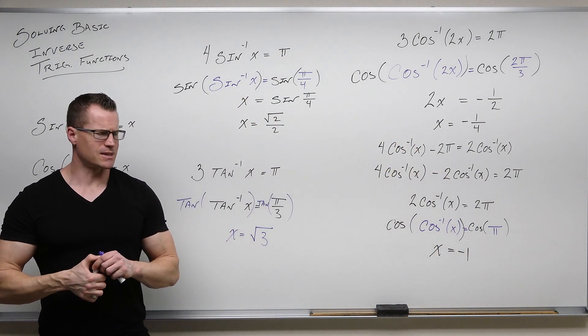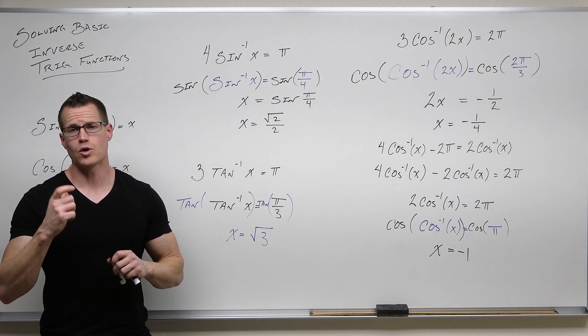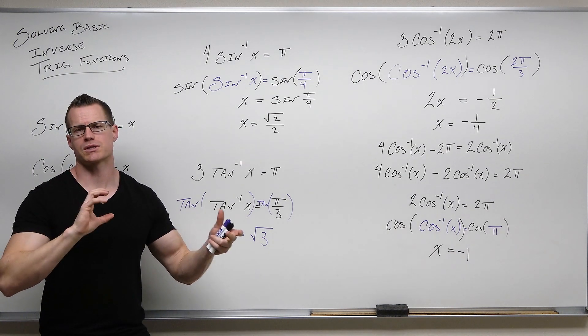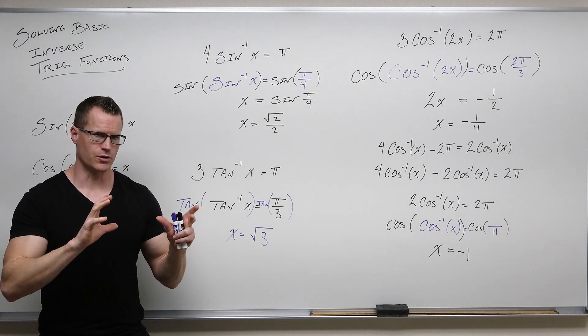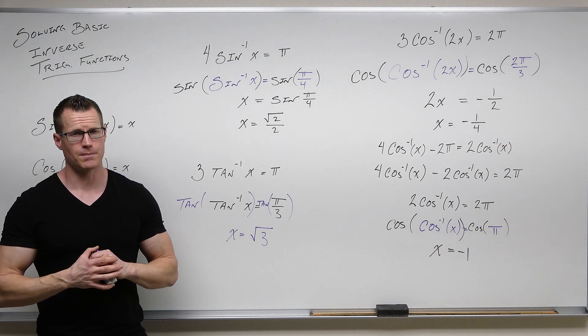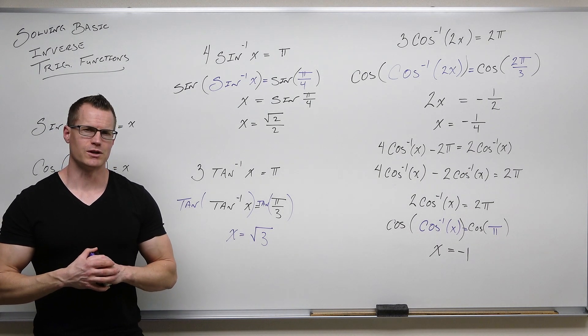And we're done. So I hope that that makes sense. It's honestly really quick. Isolate your inverse function and take the appropriate, honestly, parent function, that root function on both sides. Your functions undo inverses, just like inverses undo functions. Not a whole lot with domain that we have to mess with here, which is very nice. I hope it makes sense. And I'll see you for another video.